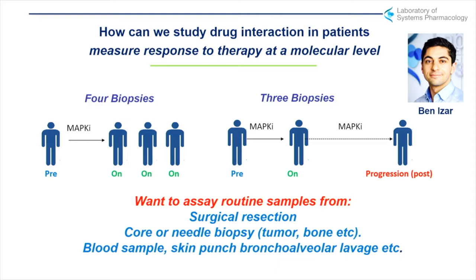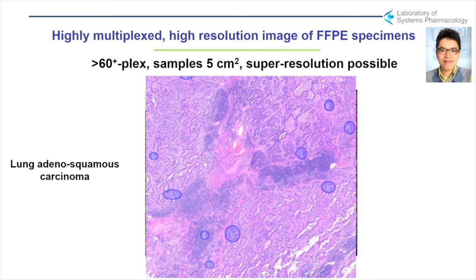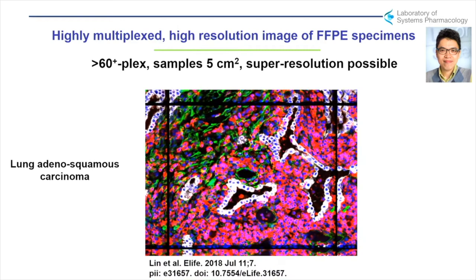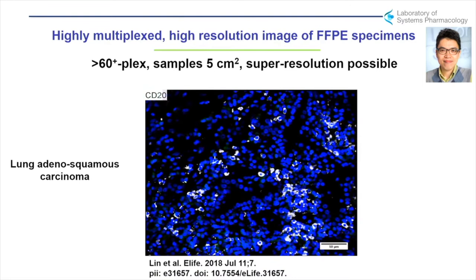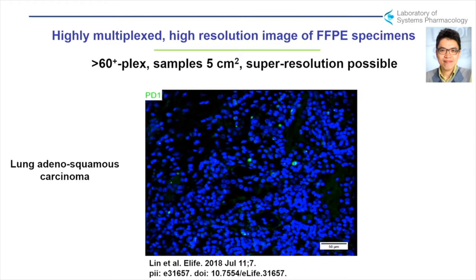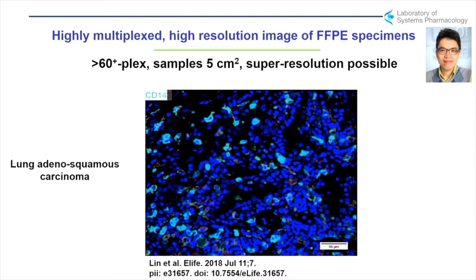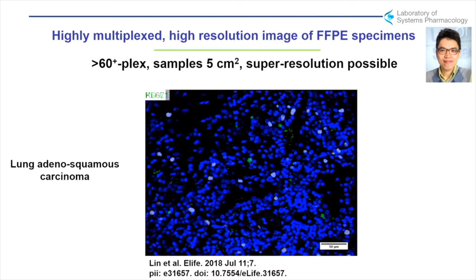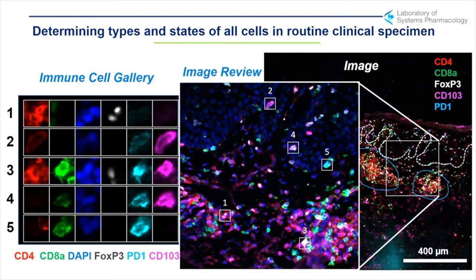We can get biopsies from patients on MAPK therapy while on therapy or after progression — surgical resection, core needle biopsy, blood sample, etc. What's traditionally been done is H&E imaging. Notably, if you go into a cancer clinic, 6% of patients are diagnosed based on a genetic mutation and 100% are diagnosed based on pathology. We've now worked on methods — entirely in the public domain — where we can take whole resection specimens, look at high resolution in about 60 channels, and go back to archival specimens.